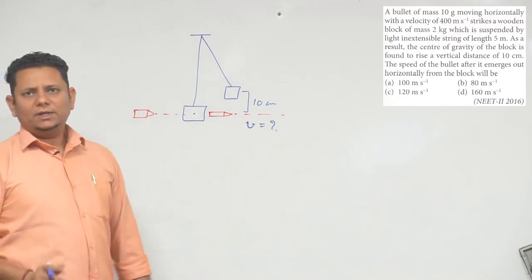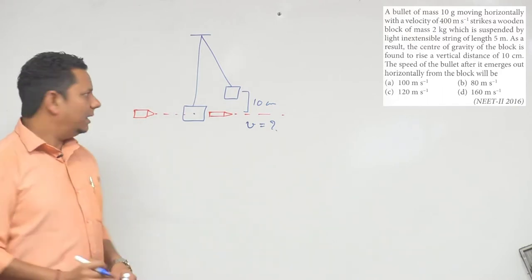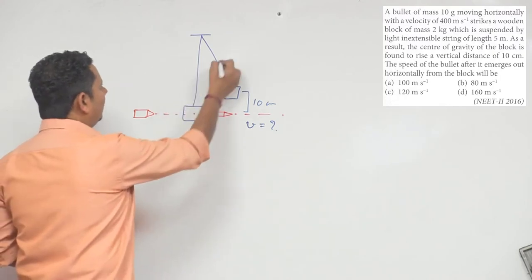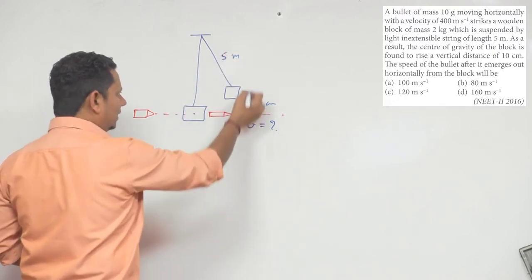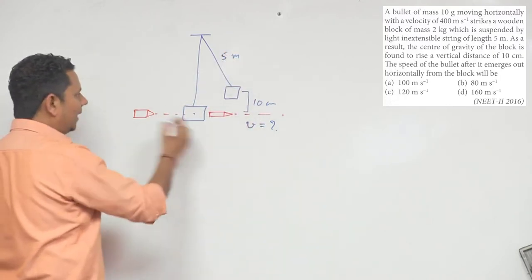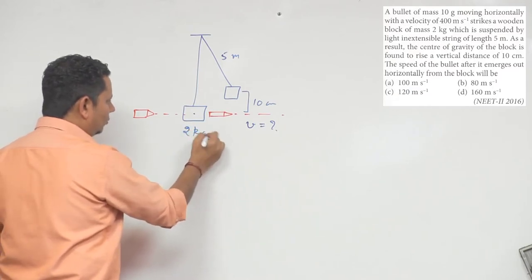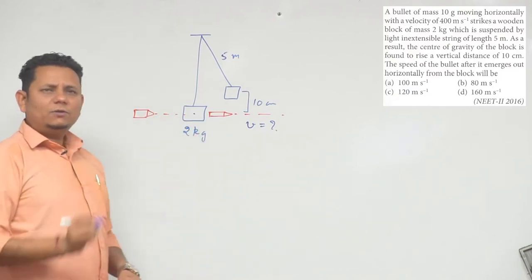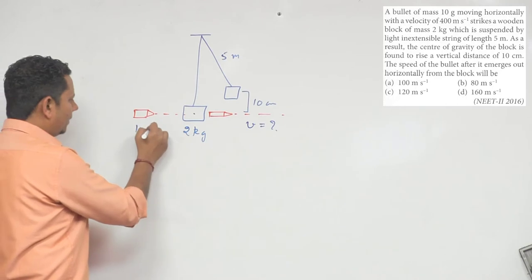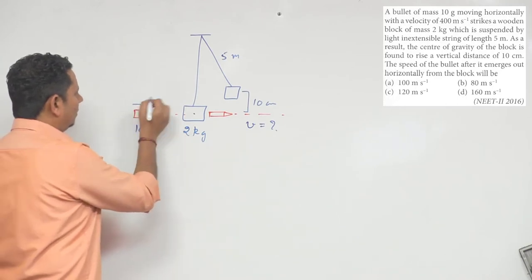Let's write down the given data: the string length is 5 meters, the block rises 10 cm, the block's mass is 2 kg, the bullet's mass is 10 grams, and the initial bullet velocity